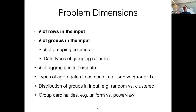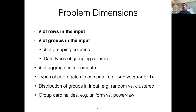Now, what are the problem dimensions — what makes aggregation very difficult? We have the number of rows in the input: it's probably easier to do aggregation on 10 rows than on 10 billion. But the most painful factor is the number of groups — the number of distinct combinations of the grouping columns. The number of grouping columns also plays a role, but overall the number of groups is what makes this painful.